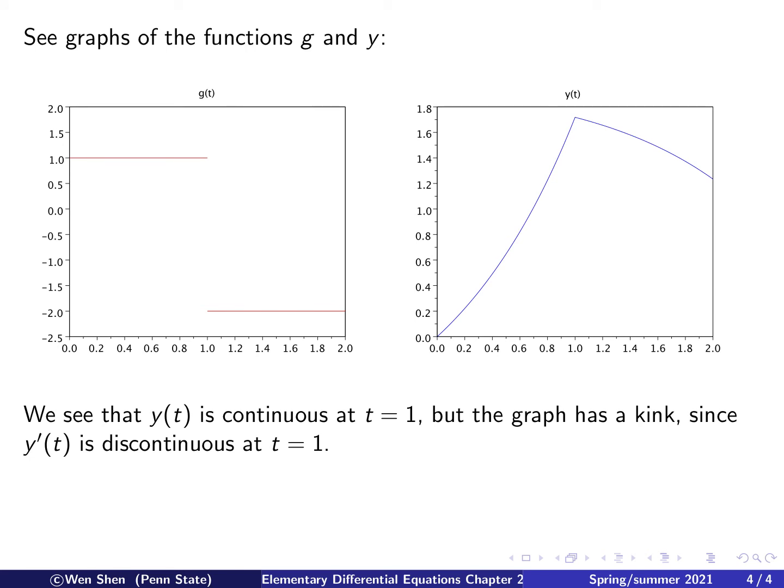Here on the left is the graph of the function g of t. This is the t-axis and that's g. And we see that from 0 to 2, the function is defined, and it has a jump at 1. It jumps down from 1 to negative 2.